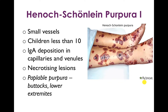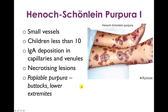Henoch-Schönlein purpura has a very characteristic appearance. It's a disease of small vessels affecting young children less than 10 years old, and the key manifestation is IgA deposition in the capillaries and venules, which leads to necrotizing lesions. You can see the necrosis in the center of these lesions. The hallmark that gives it its name is palpable purpura — these raised lesions are usually found in the buttocks or lower extremities.